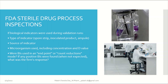Let's look at a few questions asked as part of FDA sterile drug process inspections. If biological indicators were used during a validation run, the auditor will ask: what type of indicator was used — was it spore strips, inoculated product, or ampoules? What is the source of the indicator marker organism, including the concentration and D value? Were BIs used in endpoint or count reduction mode? If any positive BIs are found when not expected, what is the firm's response? You should be ready with answers to all these questions whenever an auditor is reviewing your sterilization process.